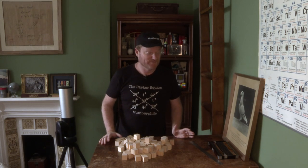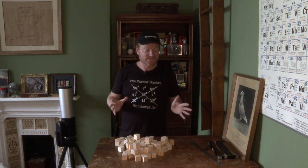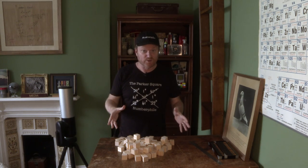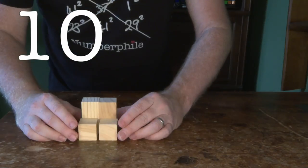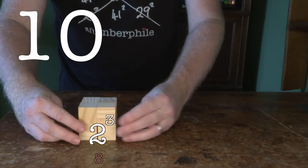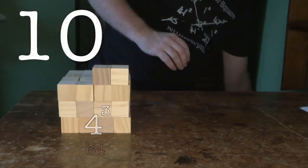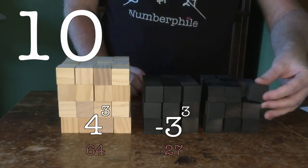But here's something else I didn't tell you. Not only do mathematicians think all integers are possible, they think they're possible in an infinite number of ways. Take 10 for example. I've already showed you 2, 1 and 1, but there's also 4, minus 3 and minus 3.